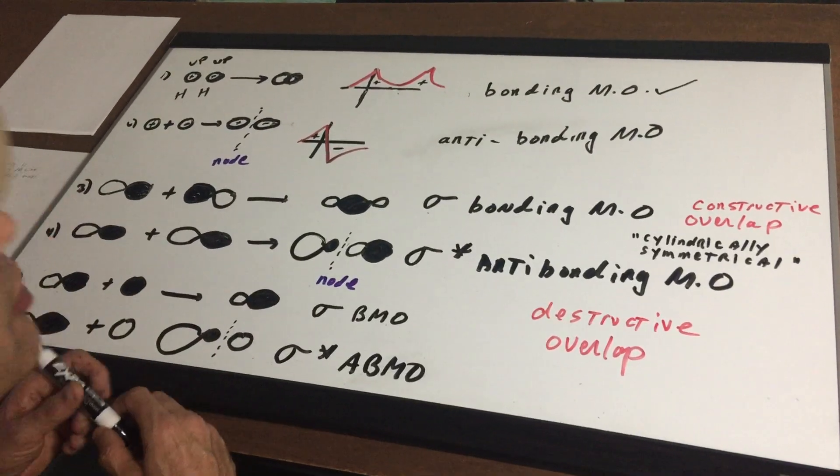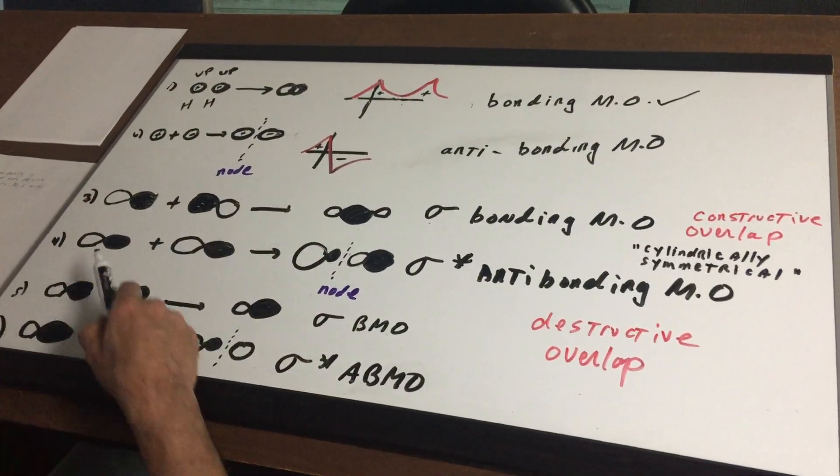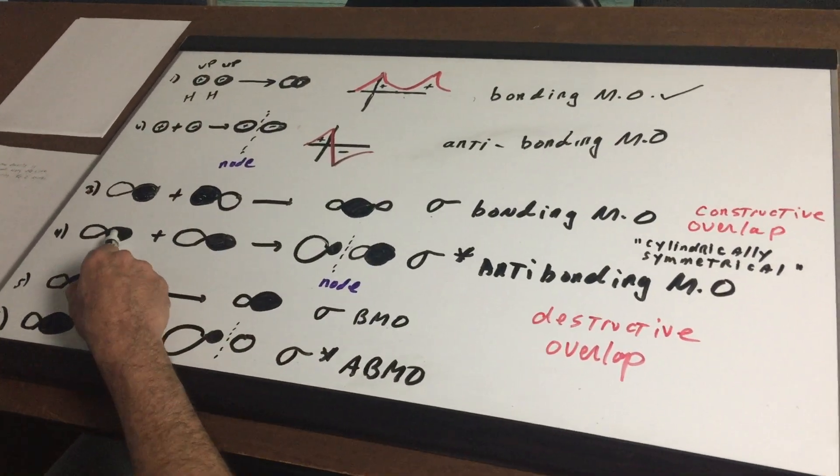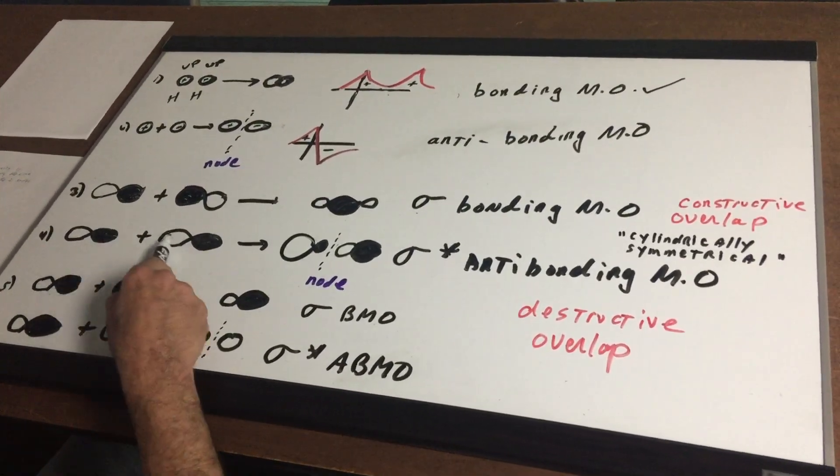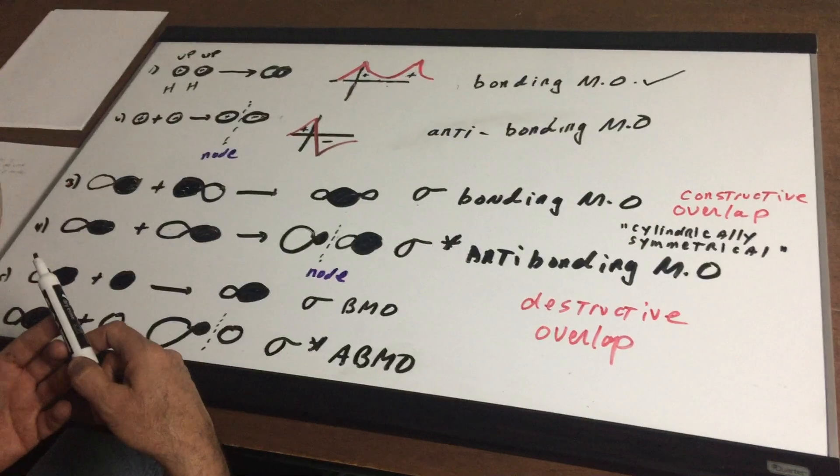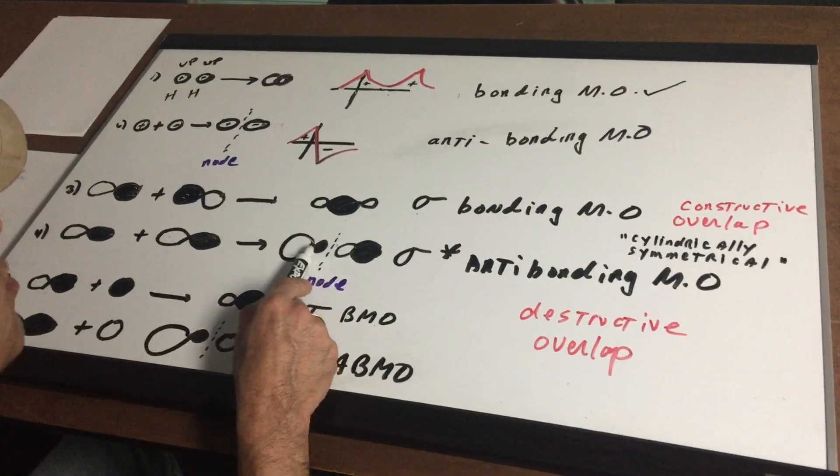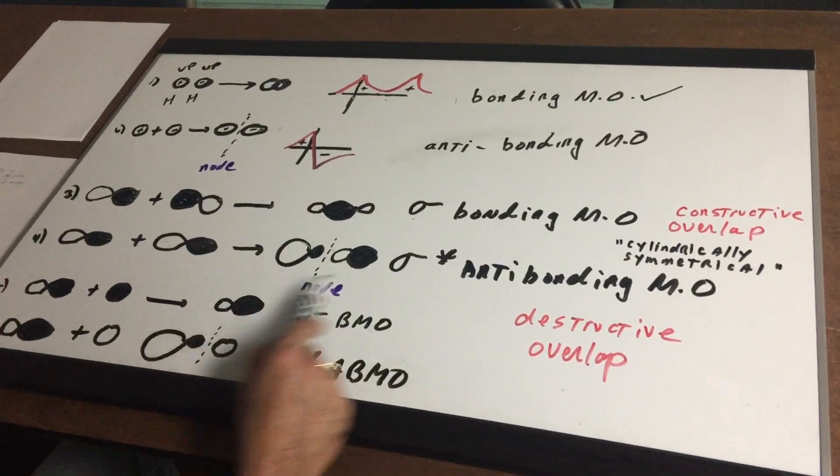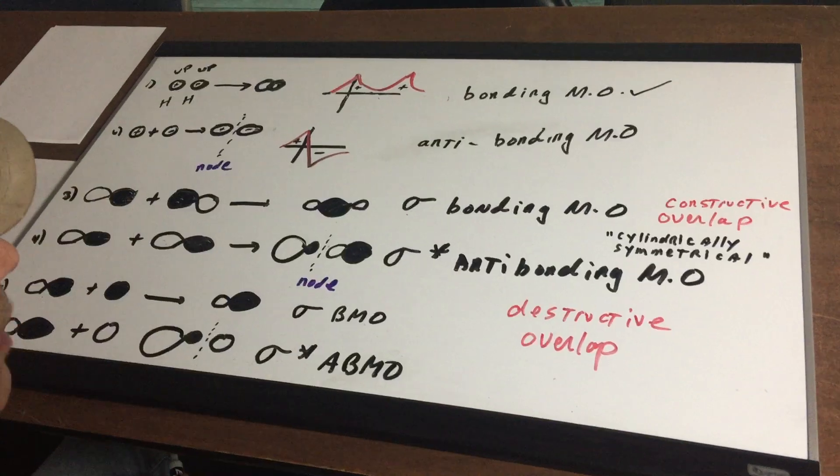But from this point on I'm not going to talk about waves, we'll talk them in these pictures. In this picture now you can see that the colors don't match each other so that means the waves are out of phase and this is a destructive overlap and as you can see this is what it would look like and we get a node and this would be what we call an anti-bonding molecular orbital.